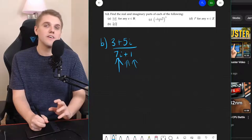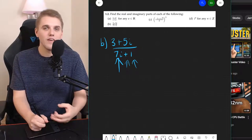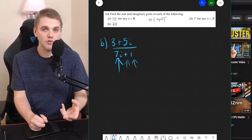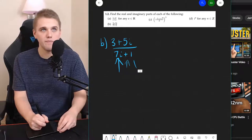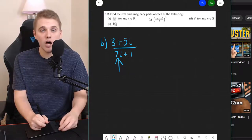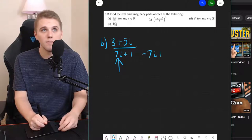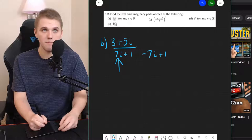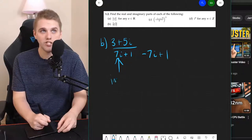But just remember that the complex conjugate is just the same as the original complex number but you flip the sign of the imaginary part. And so the complex conjugate would be negative 7i plus 1, because I flip the sign of the imaginary part.